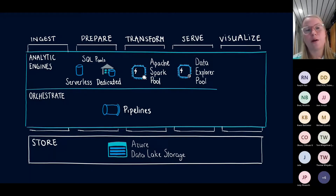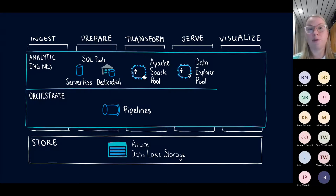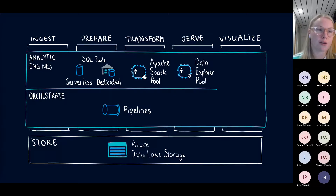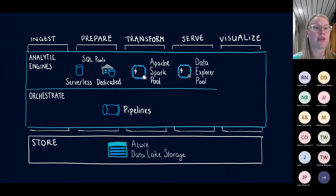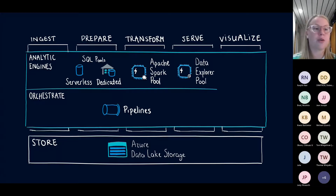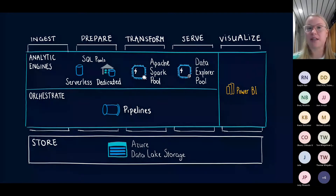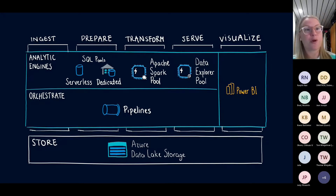With Synapse Analytics, it's smart to start small. When you set up a workspace, you start with an Azure Data Lake, pipelines, and a serverless SQL pool — those come out of the box. After that, you can add a dedicated SQL pool if you need it, or an Apache Spark pool. The visualize portion is more of an integration: you can integrate Power BI into Synapse Analytics and have it available directly from Synapse Studio.